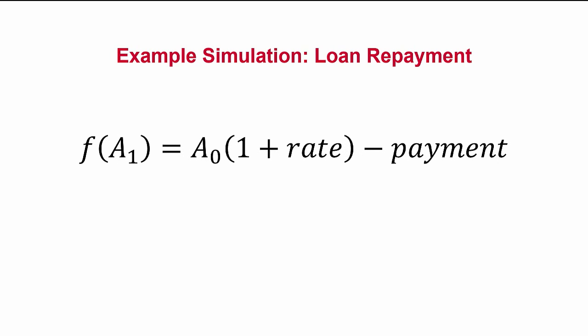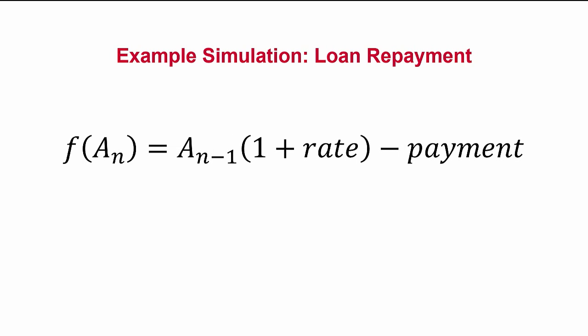We can then calculate a formula to represent the amount remaining for the second month, based on the amount for the first month. In fact, we can generalize this to represent the amount for any subsequent month, given the amount from the previous month. Note that this formula refers to itself — this means it's a recursive formula.